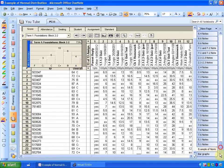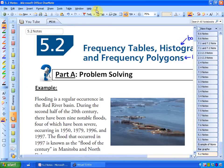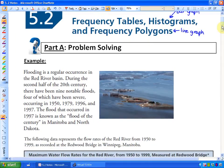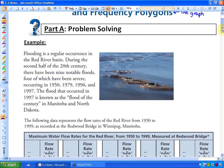So the example that I have here, if you're in my class you might have the study guide out. If not, what we are going to be doing is organizing data about floods. So the problem here says flooding is a regular occurrence in the Red River basin. During the second half of the 20th century there have been nine notable floods, four of which have been severe, occurring in 1950, 79, 96, and 97.